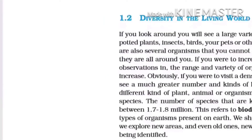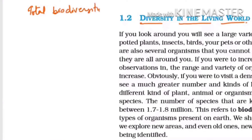In this video we are going to study the diversity in the living world. The total diversity, according to scientists — which we call an educated guess — is 30 to 50 million. This figure is given in the biodiversity chapter of Class 12.